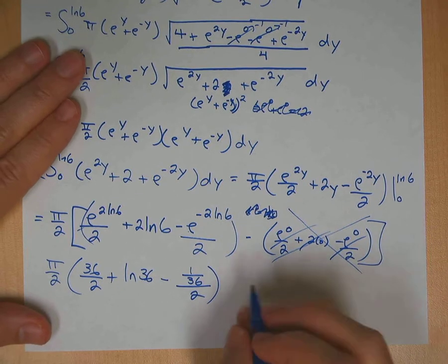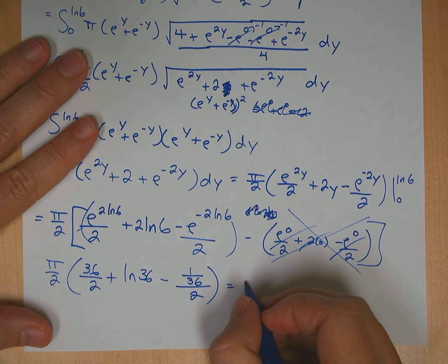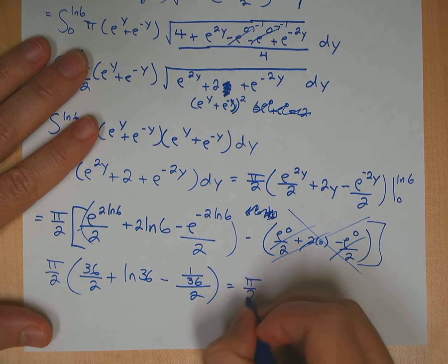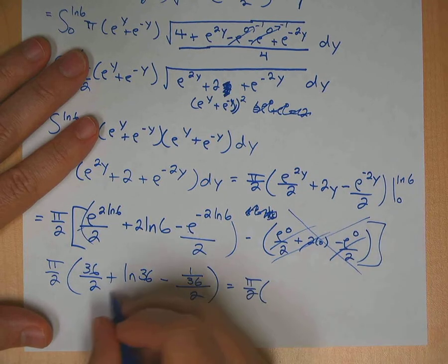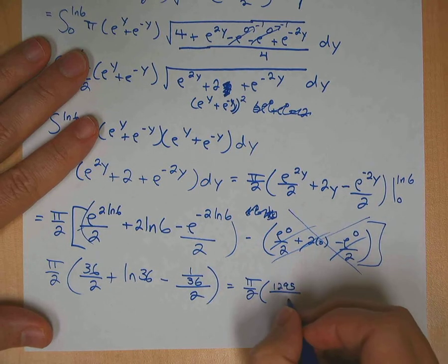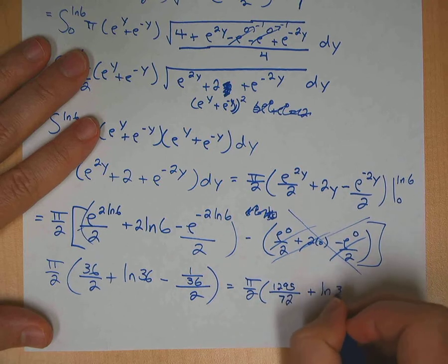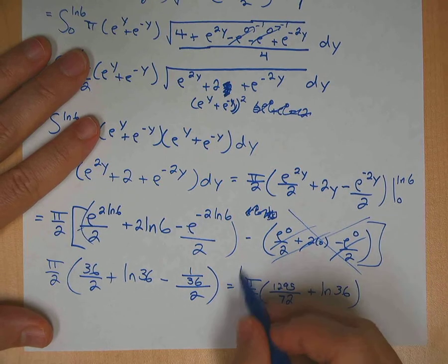Okay, so we've got a little arithmetic here. If you do that arithmetic, you will get π over 2 times—I believe these two combined would give you 1295 over 72 plus ln of 36. That's a good enough answer right there.